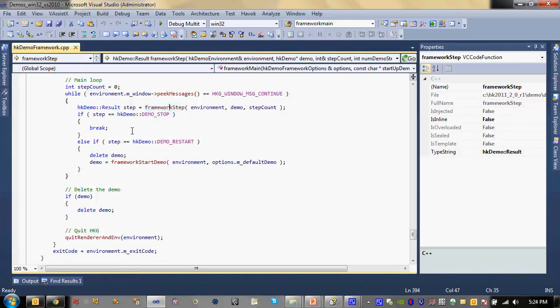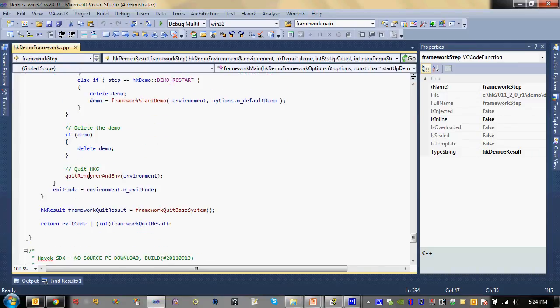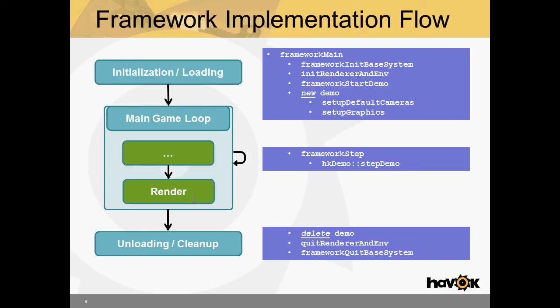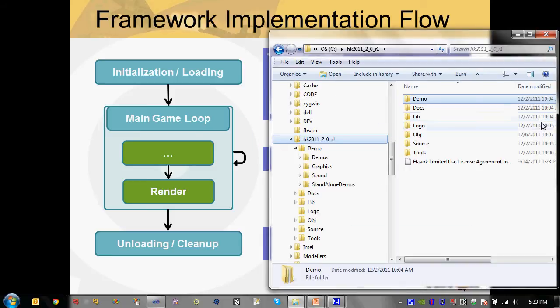So after this loop is over, it deletes the demo, quits the render and environment, and then calls framework quit base system. And that's all there is to it. So as you can see, it's pretty straightforward. There's not a whole lot here. If you want to dig into it more, you definitely can. But this is all you need to get up and running. So now let's take a look at how easy it is to make one of these demos.